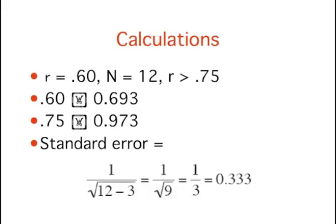Let's return to the question of determining the probability of getting a sample correlation of 0.75 or above in a sample of 12 from a population with a correlation of 0.60. The first step is to convert both 0.60 and 0.75 to z'.